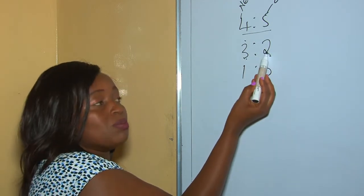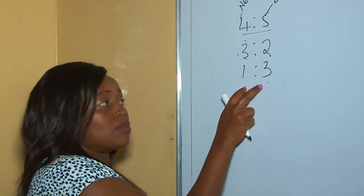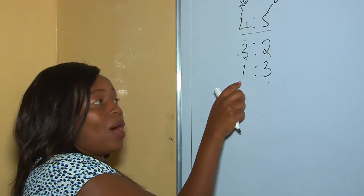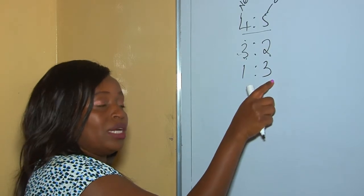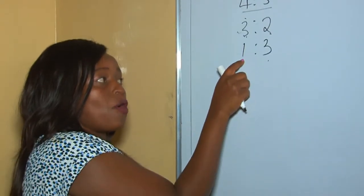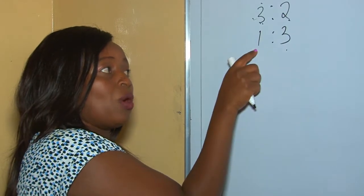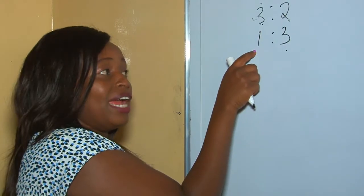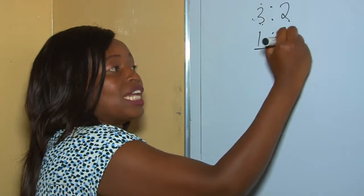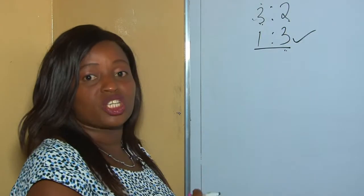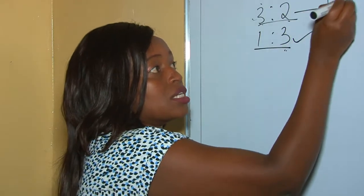With a ratio increase, we move from a small to a big number. Looking at the ratio 1 is to 3, our current is smaller than the old one, therefore we have decreased — we have moved from a higher level to a lower level. This is a ratio decrease. So 4:5 and 1:3 indicate ratio decrease, but 3:2 indicates ratio increase.